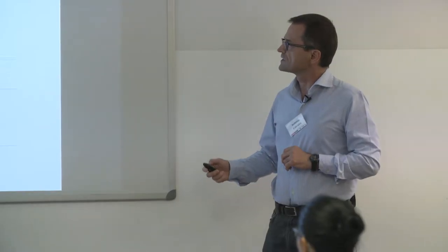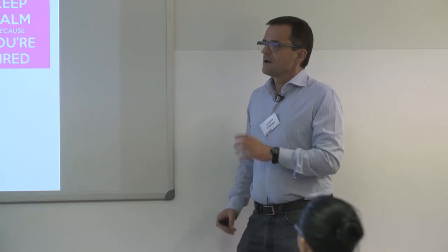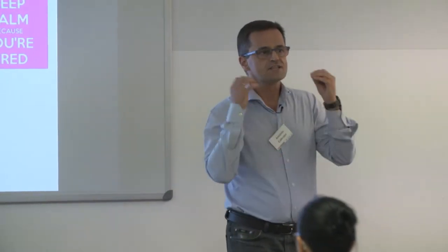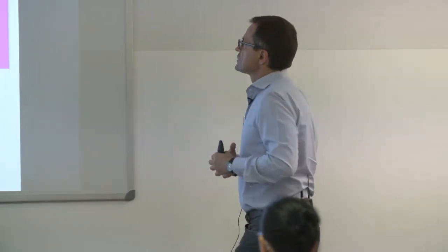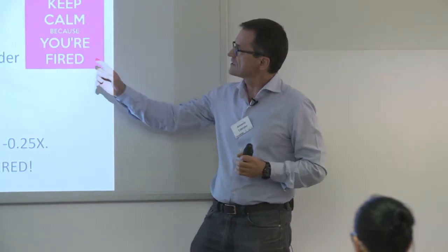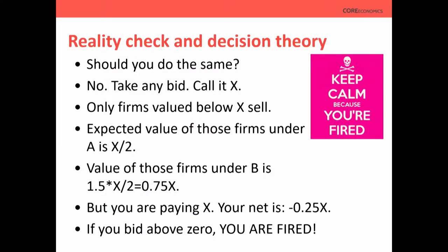Here's the reality check. Take any bid — call it x. Only firms valued below x will sell to you. The expected value of those firms under A's management will be x/2. But you're B, so it's worth more — the value under B's management is 1.5 × (x/2) = 0.75x. You're paying x and getting back on average 0.75x. Your expected return is negative. This is true for any x, so the best you can do is bid zero.